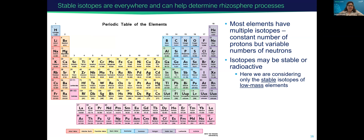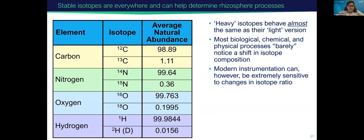Most elements have multiple isotopes — a constant number of protons but different numbers of neutrons. Isotopes can be stable or radioactive; here we are really considering only light, stable, low-mass elements. Specifically in our lab, we tend to look at carbon, nitrogen, oxygen, and hydrogen. For each of these elements, we have a light stable isotope and a heavy stable isotope. For all of these, the average natural abundance is much greater for the light stable isotope than the heavy stable isotope.